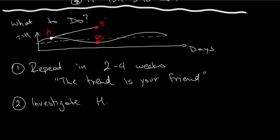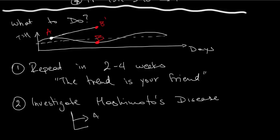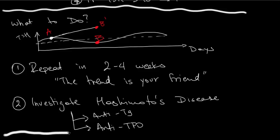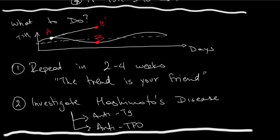Together with a second blood test two to four weeks later, you should investigate acquired hypothyroidism. The most common cause of acquired hypothyroidism in the pediatric age group is Hashimoto's. Most of these patients — not all — will have antibodies. So you need to get antithyroglobulin antibody and antithyroperoxidase antibody, which will go a long way in helping you diagnose if there's an actual organic disease present.